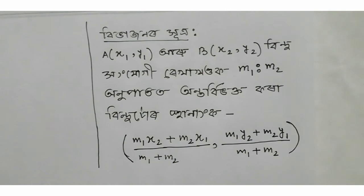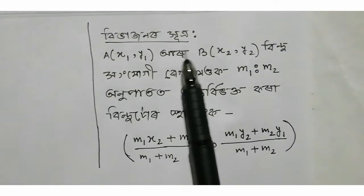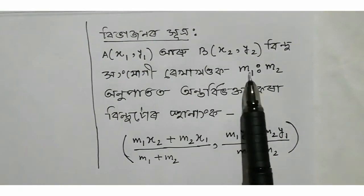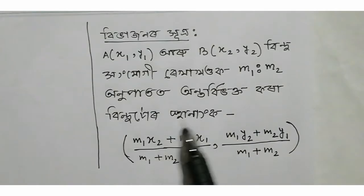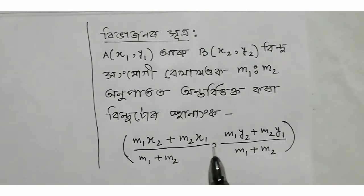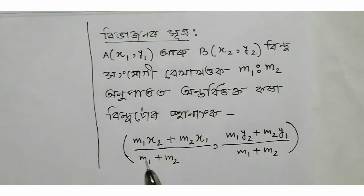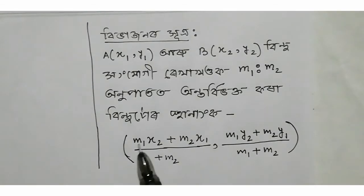So let us begin. First, students, I will use the section formula style. I will perform the division. Now we have to write about M1 plus M2, and M1 is the same.